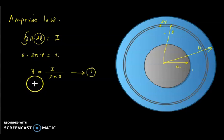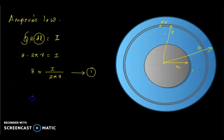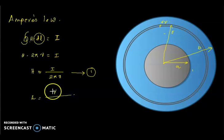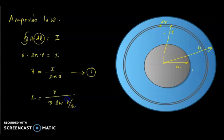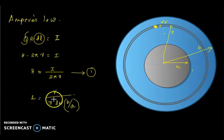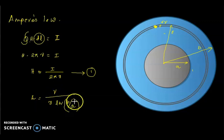In module 2 we derived the expression for the electric field strength of a coaxial cable. E is given by: E = V / (r · ln(b/a)), where V is the voltage, r is the arbitrary radius, and b/a is the ratio of outer to inner radius. Let us call this equation 2.